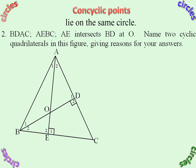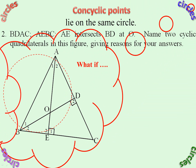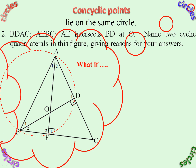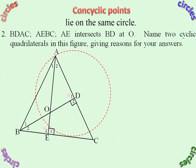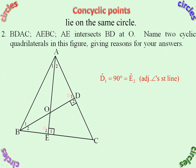Third example: we have to name two cyclic quadrilaterals in this figure with three sleeves. Well, there's one — can you see why? What if it was cyclic? That would equal that, or that would equal that, or both. We already have a 90 there, so that's got to be 90, and there's a 90 so that's got to be 90. Therefore D1 equals 90, equals E1. E2 adjacent angle straight line. Therefore cyclic — Converse Angles in the Same Segment. That's one cyclic quadrilateral.